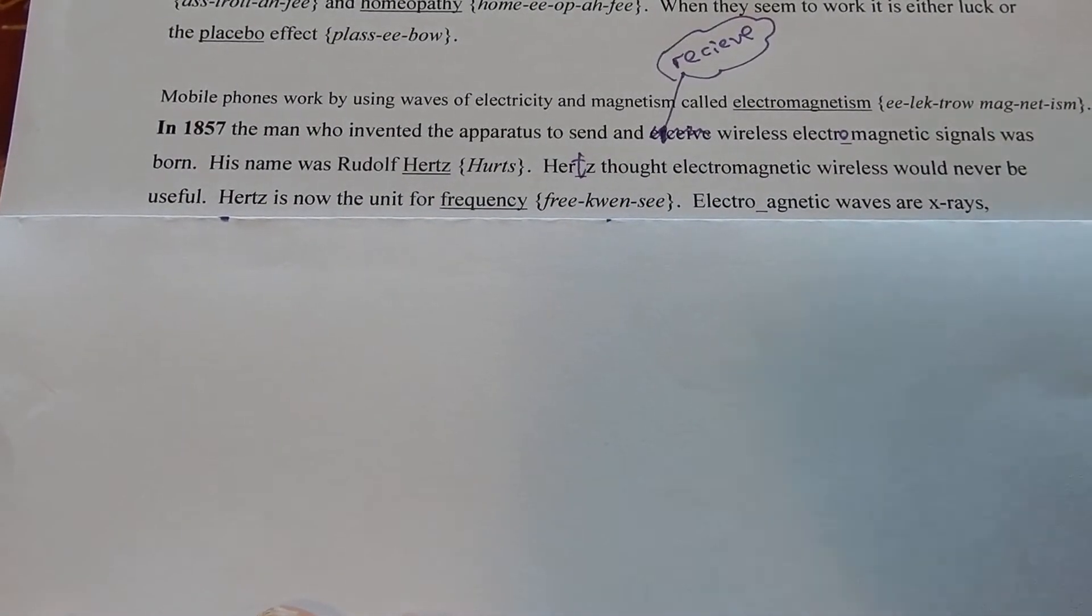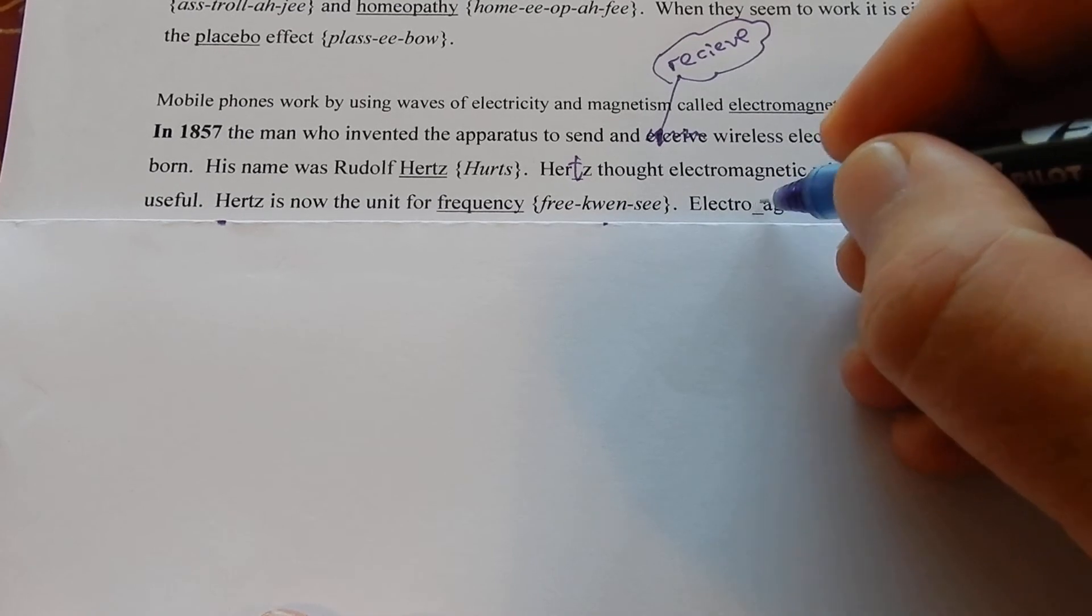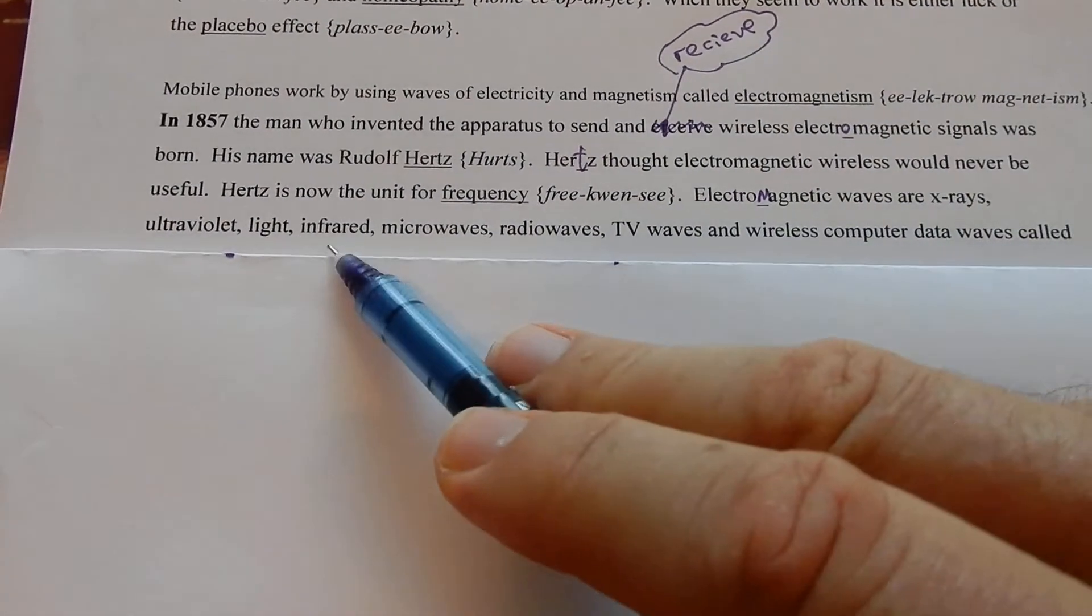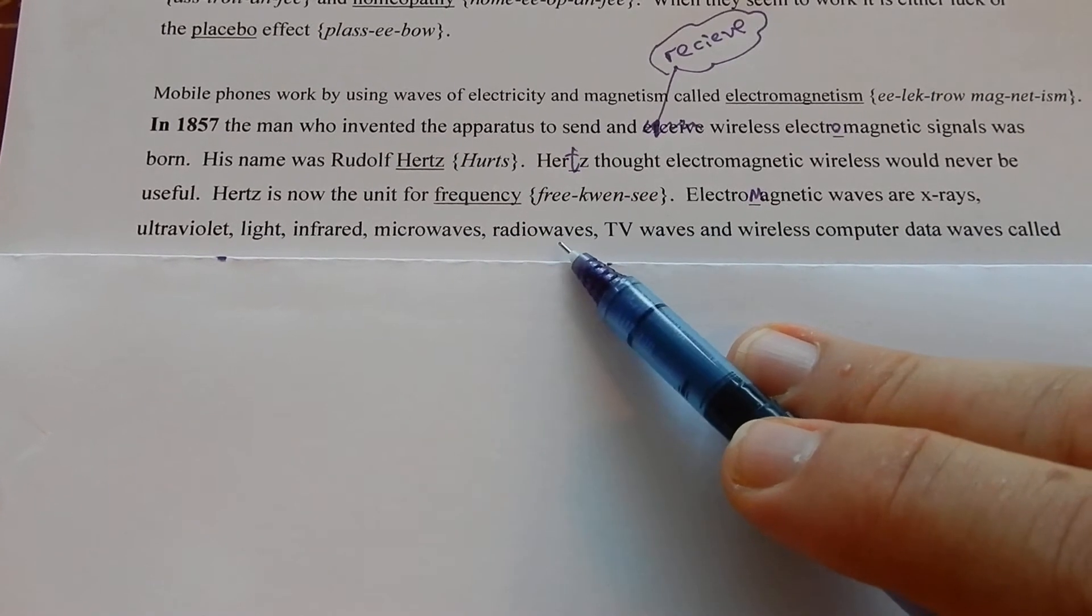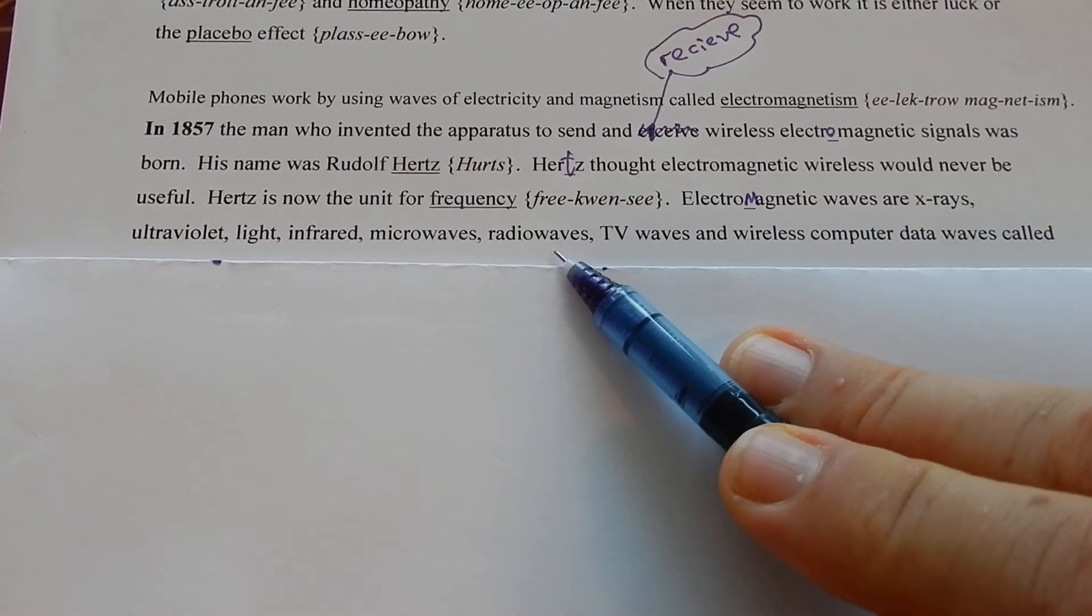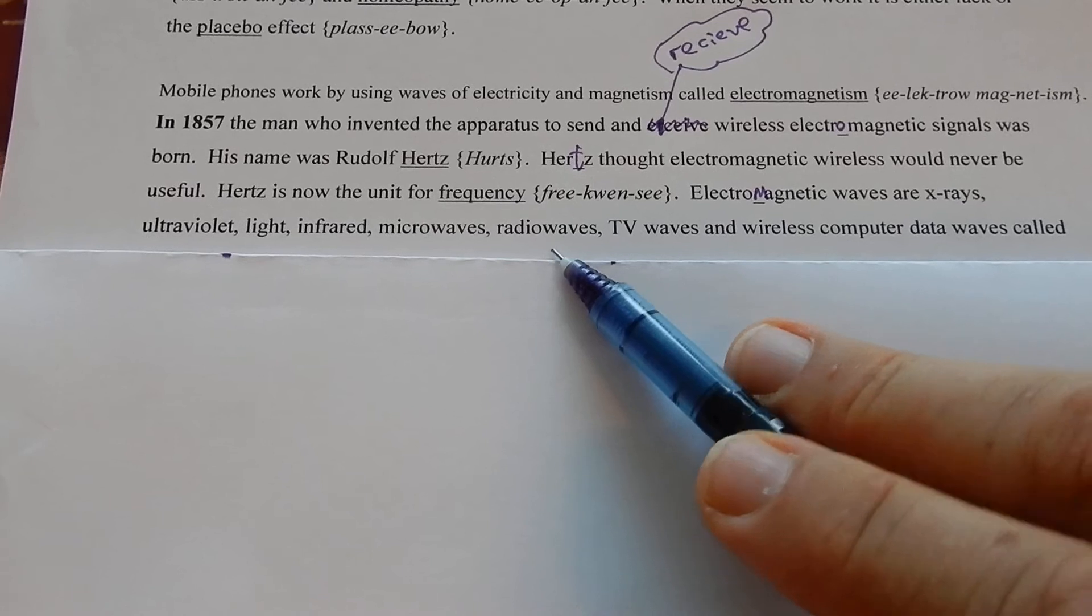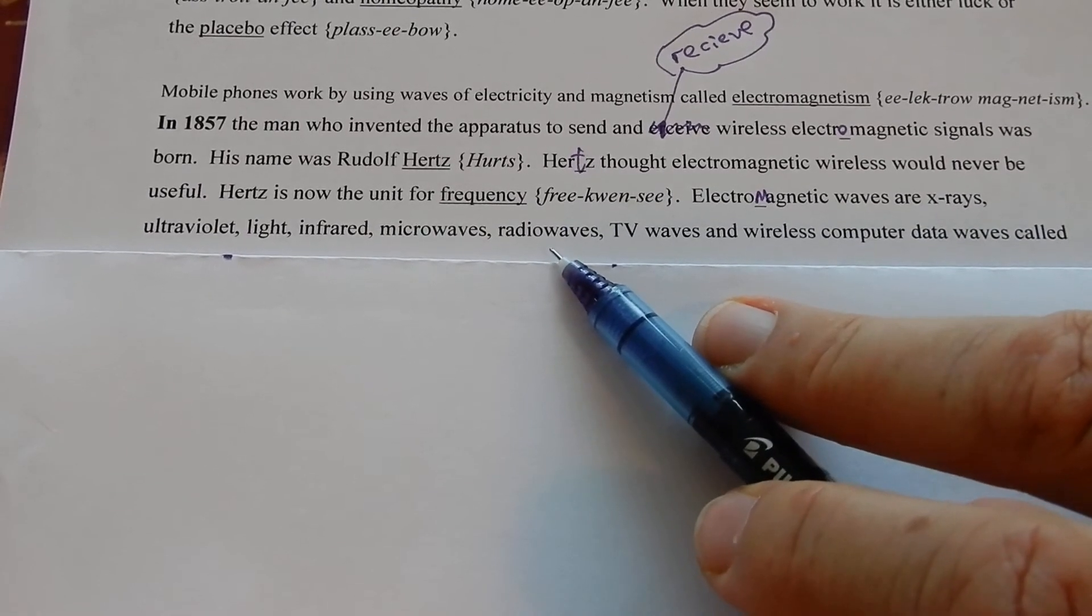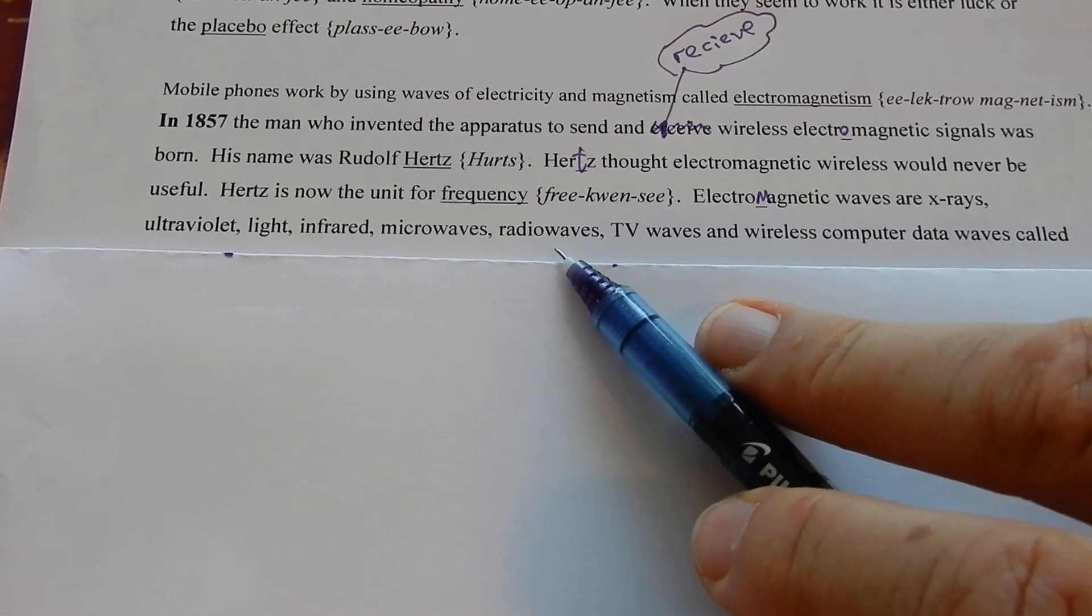Electromagnetic waves are x-rays, ultraviolet, light, infrared, microwaves, and radio waves - all the waves apart from sound waves, waves on the sea, and the waves that go up and down the wires in guitars. All of them are electromagnetic waves.